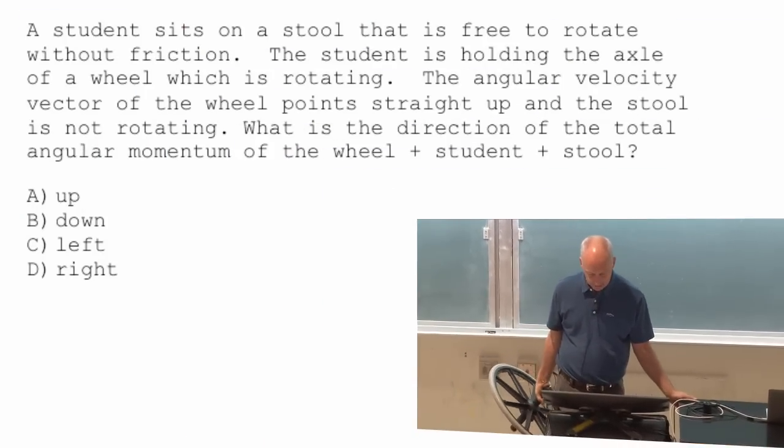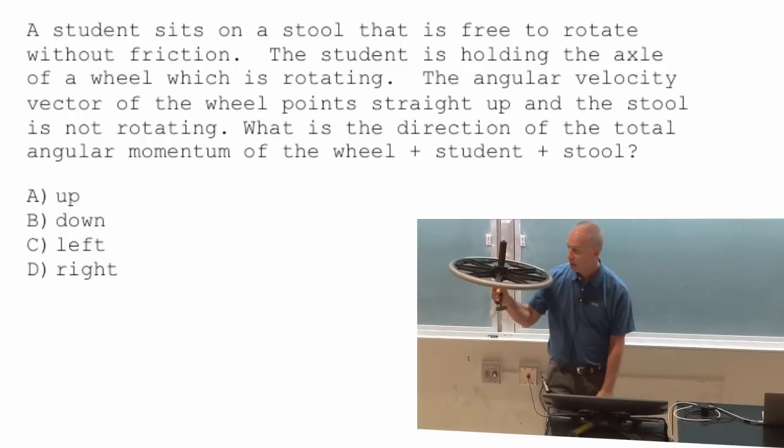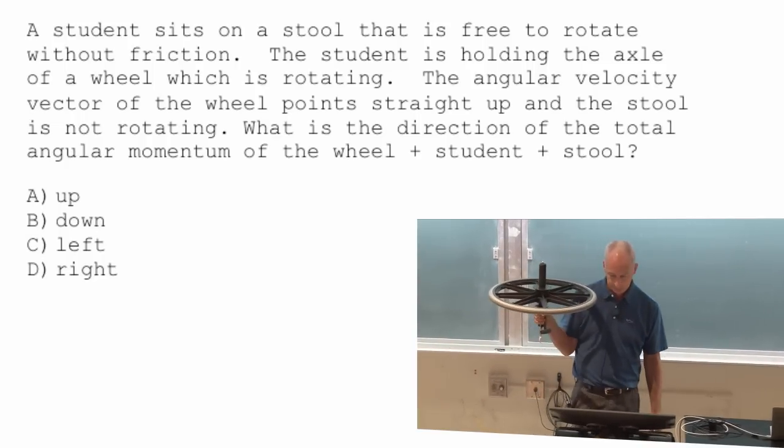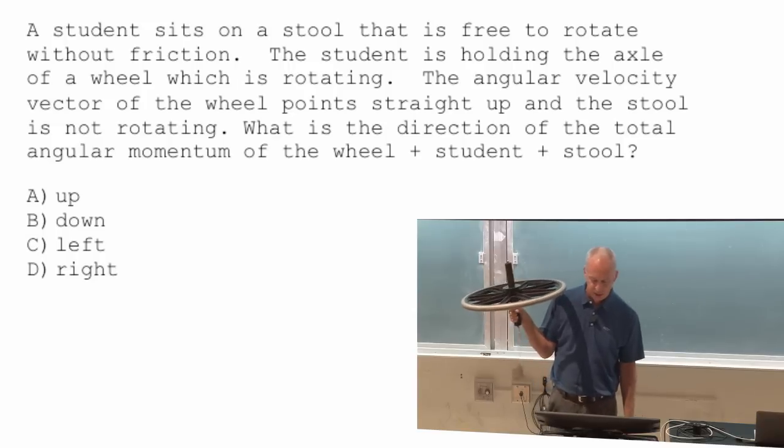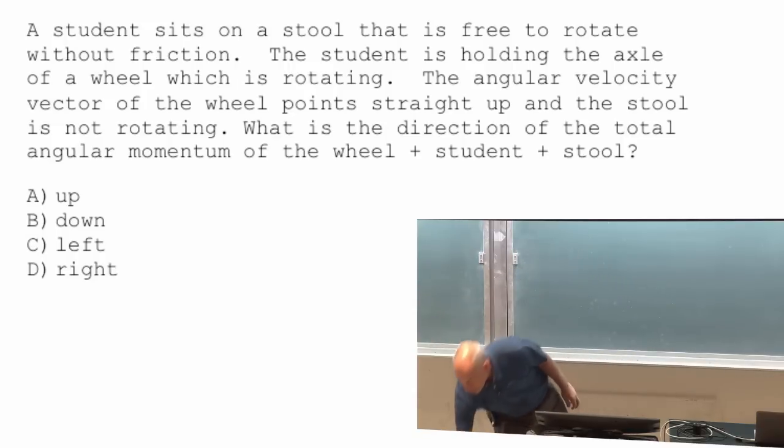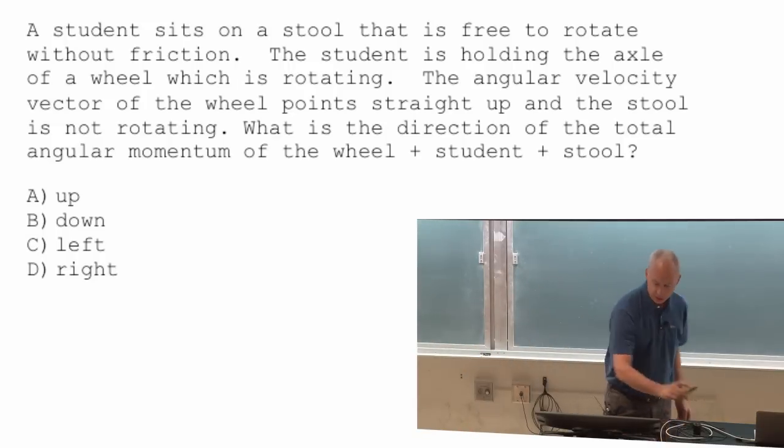Angular velocity vector of the wheel, this thing right here, points straight up. Student and the stool are not rotating. What's the direction of the total angular momentum wheel, plus student, plus stool?